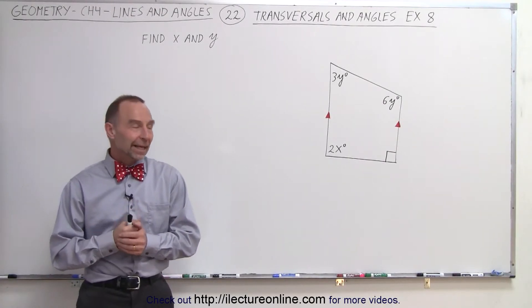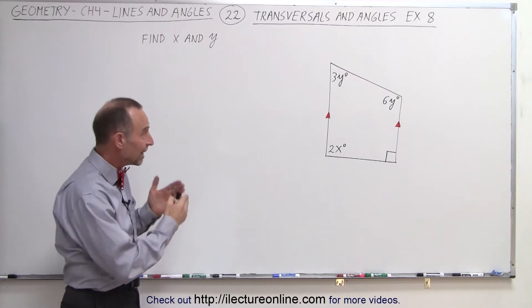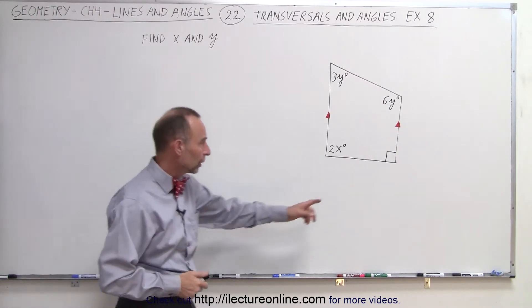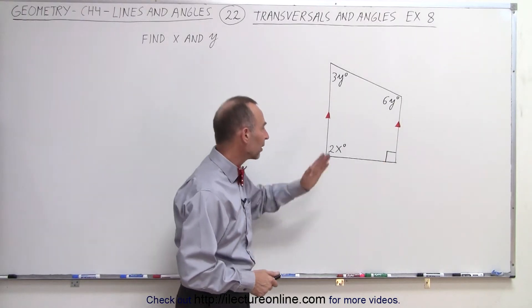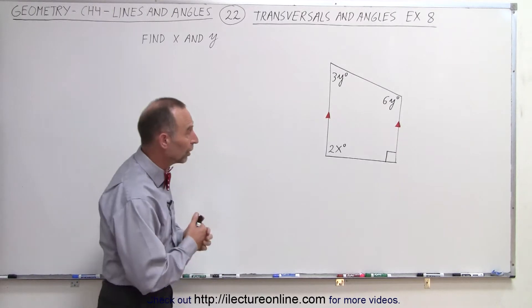Welcome to ElectronLine. In this example again, we have a figure for which we need to find the angles indicated in terms of x and y. We're told that this angle here is a 90 degree angle, and we're told that these two opposite lines here are parallel to one another.